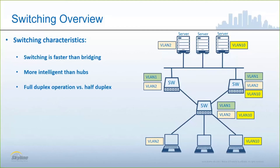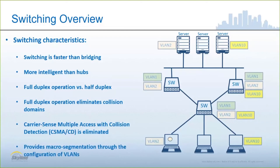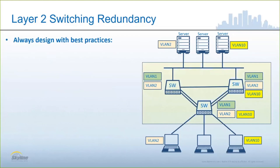Switching allowed us to move to a full duplex environment, as opposed to the half duplex environment that was characteristic of bridging and hubbing. Full duplex operation effectively eliminates the collision domains created by bridges and hubs, giving us the ability to disable the CSMA/CD mechanism on our endpoints. Switches also provide macro-segmentation through the configuration of virtual local area networks — dividing a single switch into multiple switching architectures within the same physical hardware.